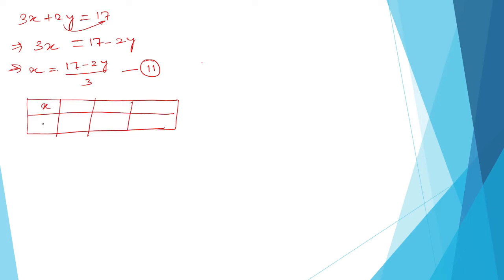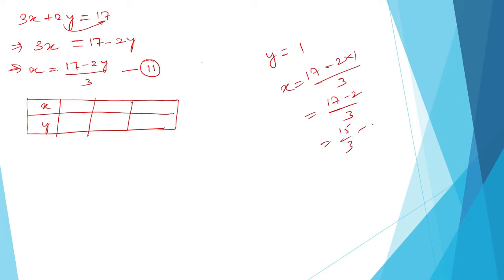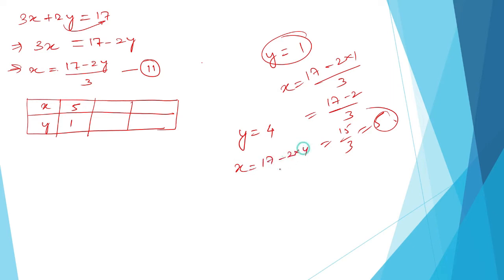For equation 2, x = (17 − 2y) / 3. When y equals 1: x = (17 − 2×1) / 3 = (17 − 2) / 3 = 15/3 = 5. So y=1, x=5. When y equals 4: x = (17 − 2×4) / 3 = (17 − 8) / 3 = 9/3 = 3. So y=4, x=3.